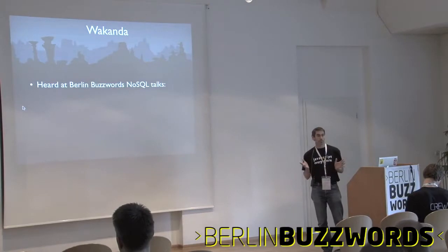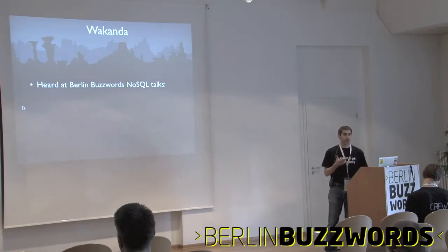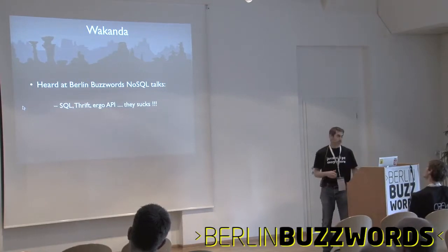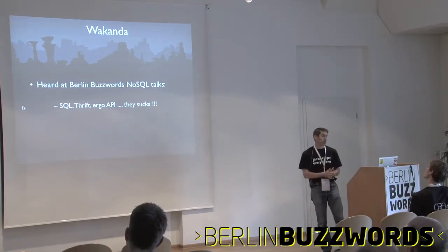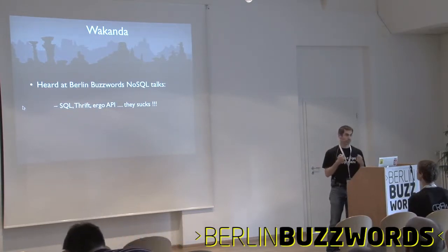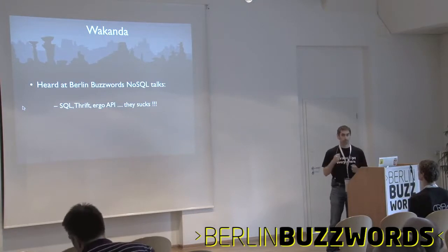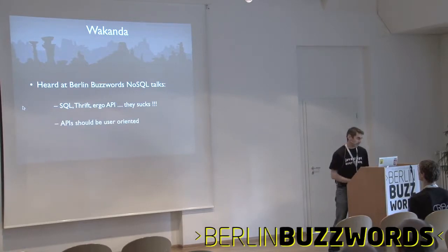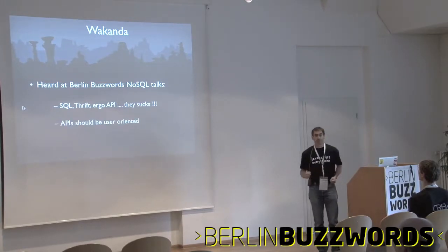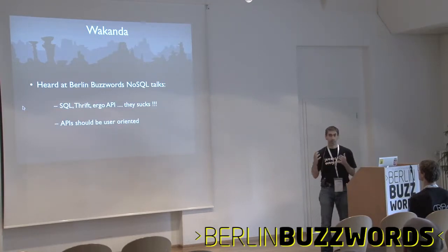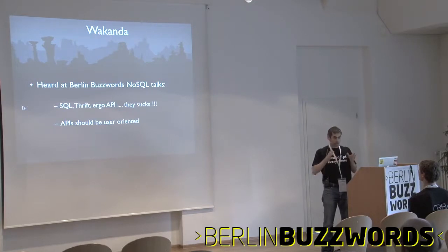So maybe some of you have been to some NoSQL talks. One said SQL, Swift, Agro API — they suck. It's too far from what you need for just your business. You have to figure out technical problems, how you make your joins and things like that. So the API should be more user-oriented, so you will have less problems when you try to debug. You will only debug what you write for your business.